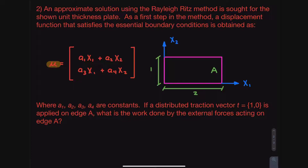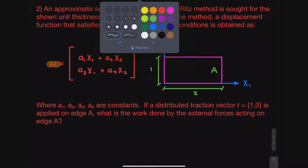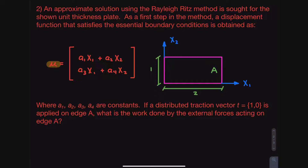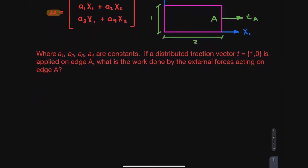The question asks: if a distributed traction vector T equal to [1, 0] is applied on edge A, what is the work done by the external forces acting on edge A? This is an external work question related to traction vector T on edge A. The formula for work done due to a traction vector uses a surface integral over the partial domain, where we take the integral of the traction vector dotted with our displacement vector over the surface.